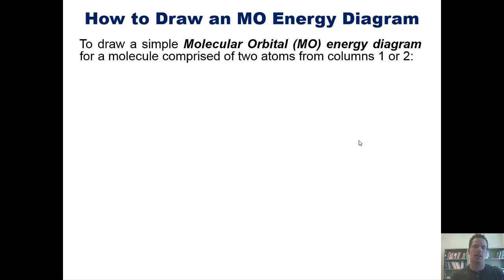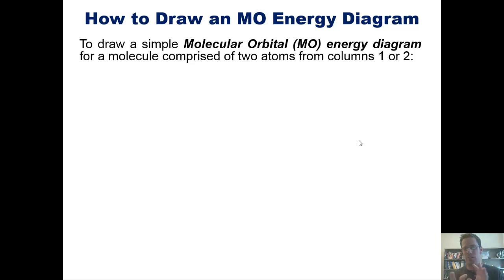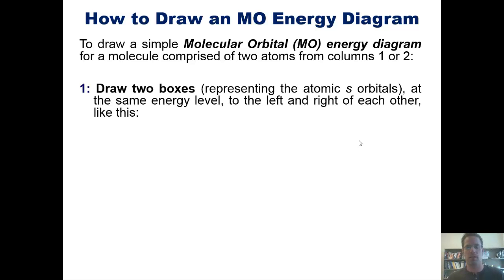Now I want to teach you how to draw an MO energy diagram. To draw a simple molecular orbital or MO energy diagram for a molecule comprised of two atoms from columns one or two of the periodic table, you follow these steps — noting that for molecules with more than two atoms or atoms outside columns one or two, it gets much more complicated. Step one: draw two boxes representing the atomic S orbitals at the same energy level, to the right and left of each other. Step two: add arrows to each box to indicate the number of S valence electrons for each atom.